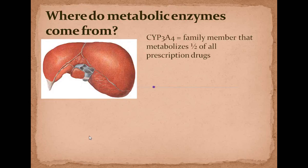CYP3A4 is a family member that metabolizes half of all prescription drugs. This is a really important enzyme — we don't all have the same cytochrome P version of 3A4. My version of this enzyme and your version could be different. If your version is very efficient and powerful, your prescription drugs will not work as well — they get broken down too efficiently. You need a higher dose, which is why what works for one person won't work for another person. Finding the right dosage of drugs is difficult.